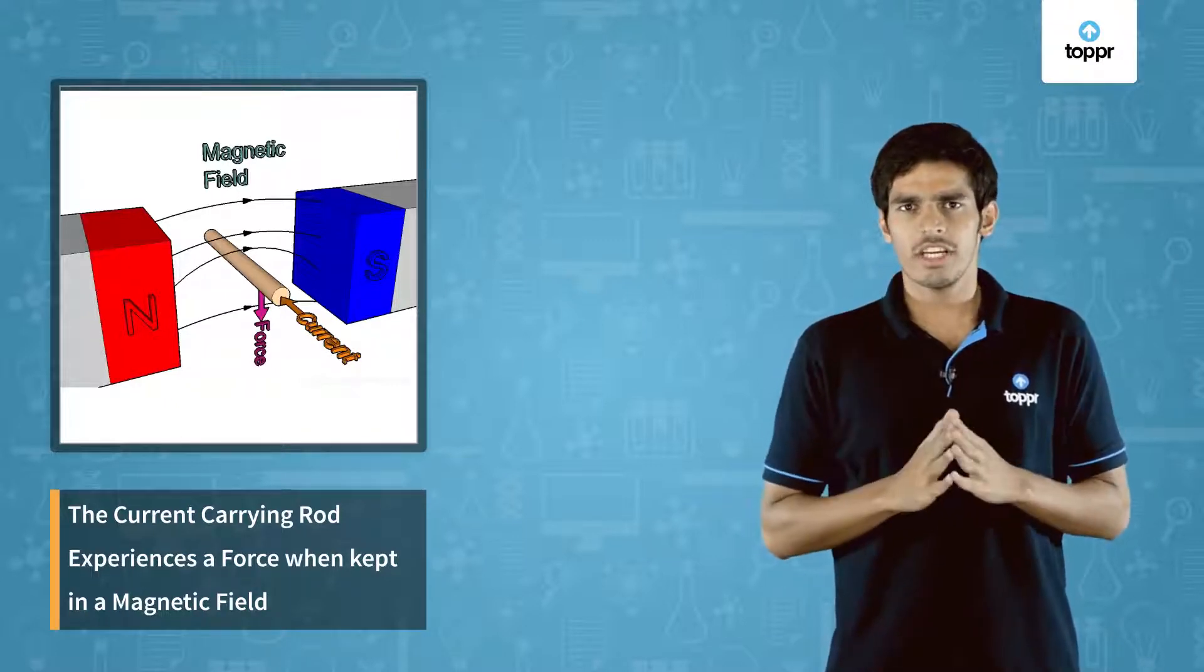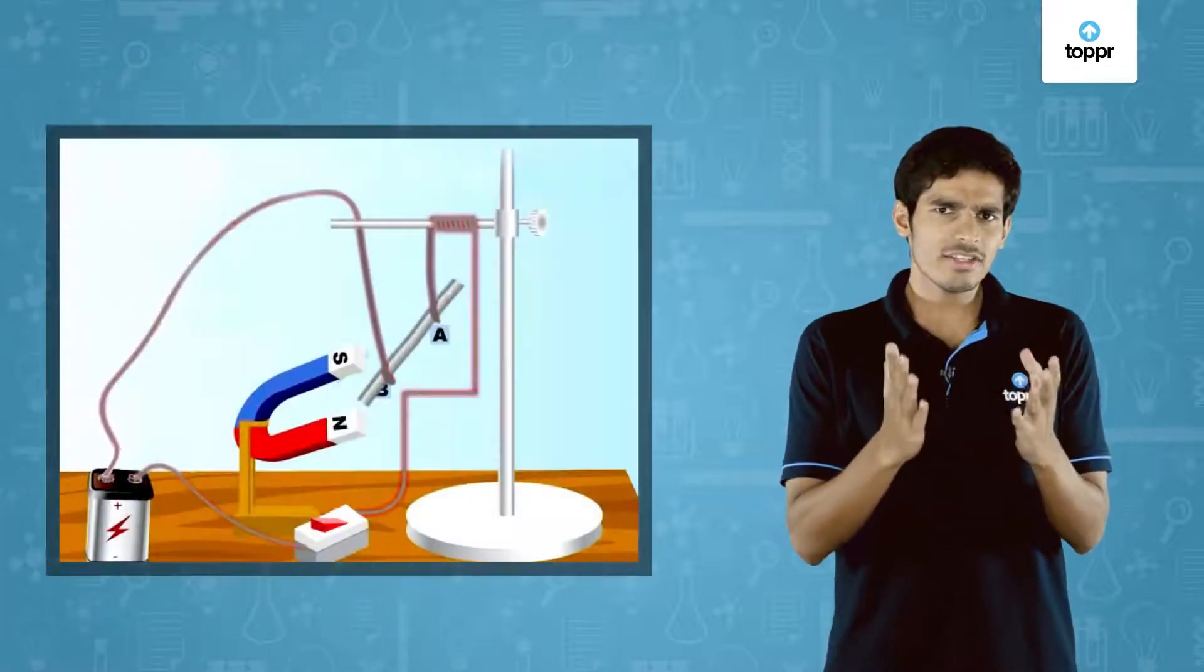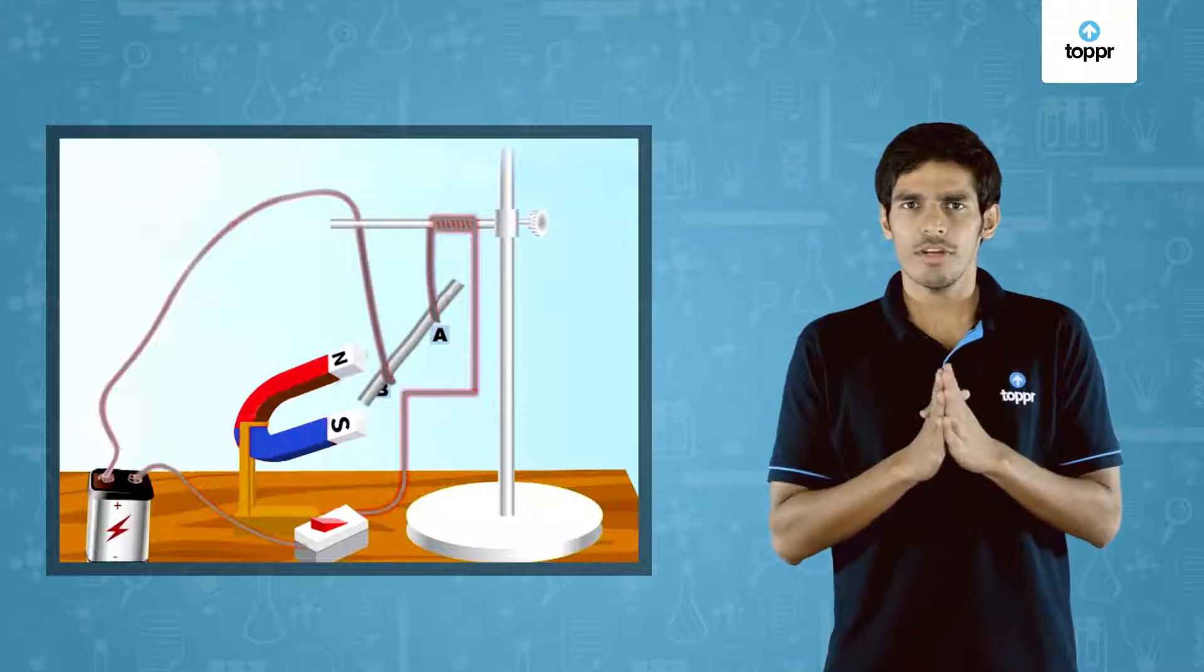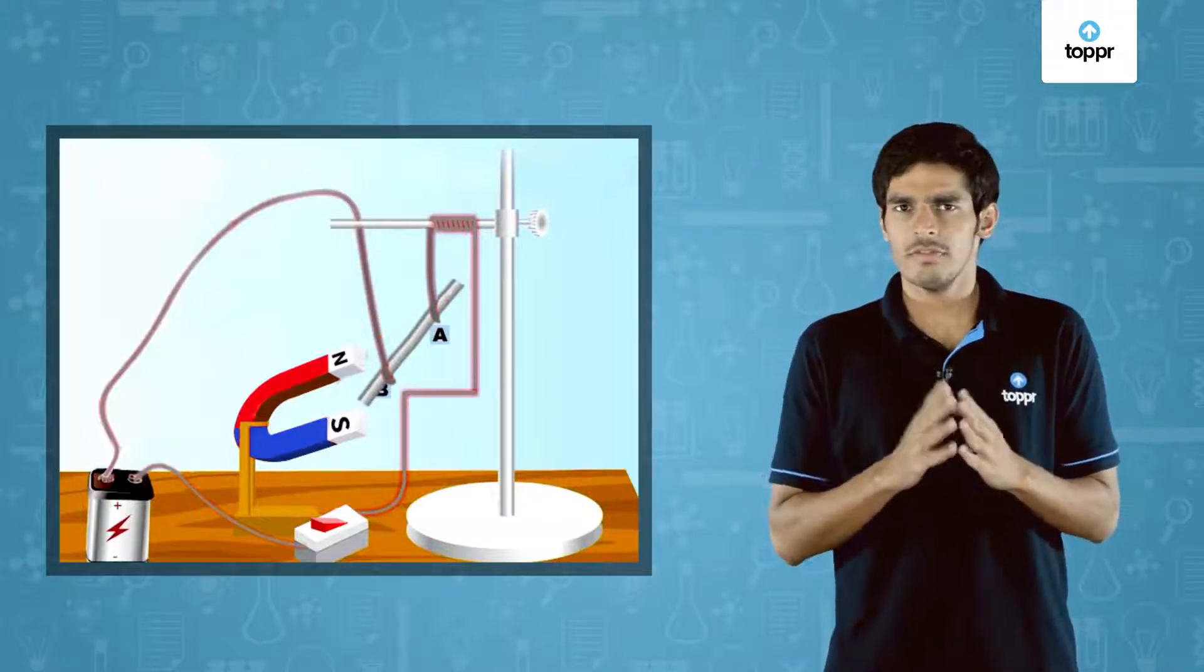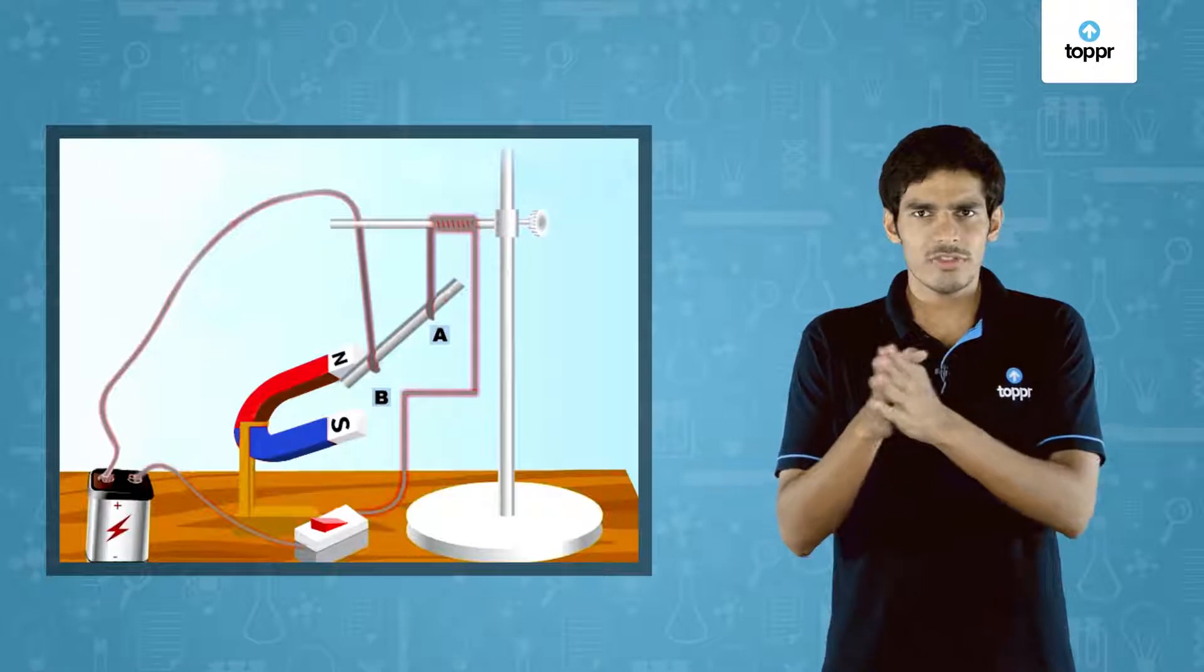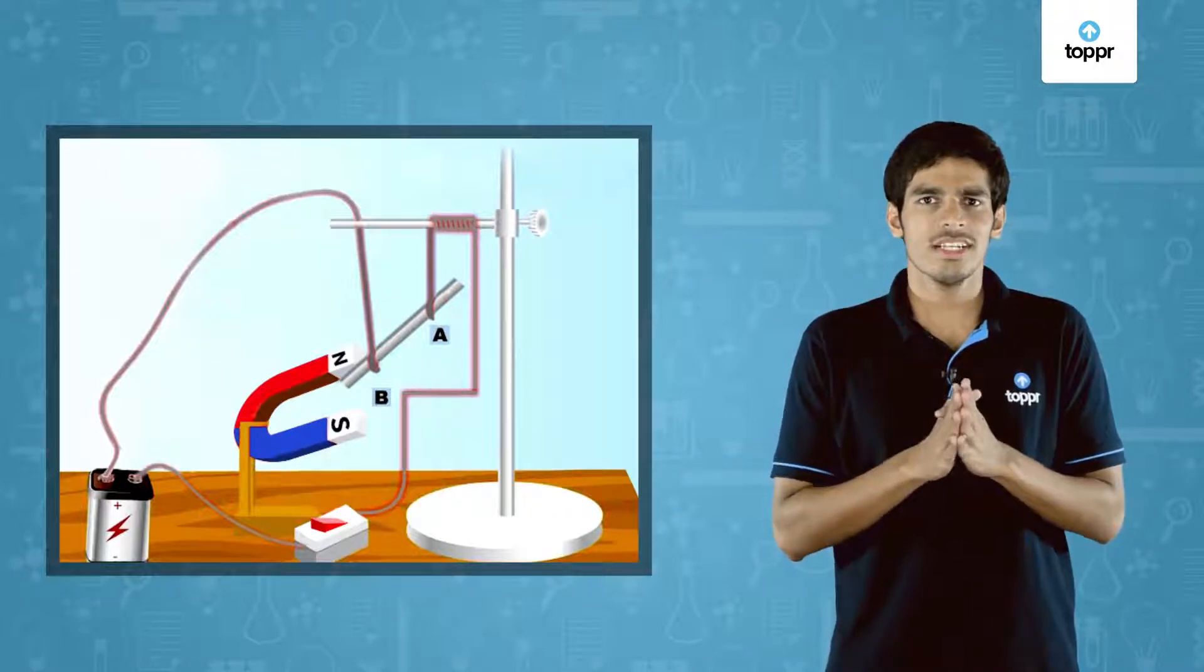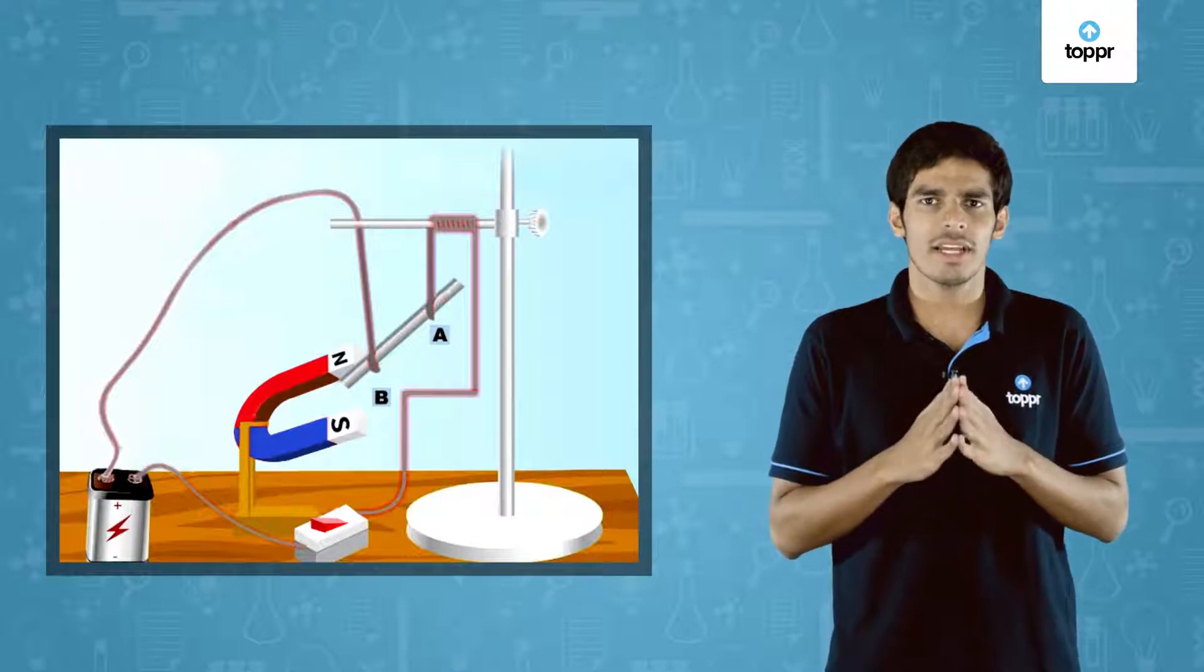Let us do one more modification to our experiment. Let us reverse the direction of magnetic field and let the current be flowing from A to B only. We observe the aluminium rod shifts to the right. This suggests the direction of force is also dependent on the direction of magnetic field.